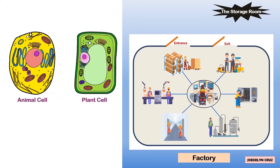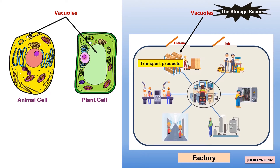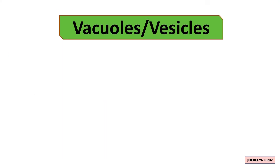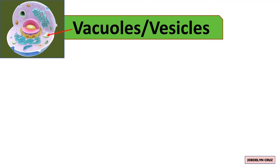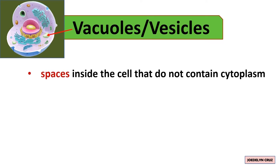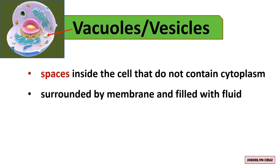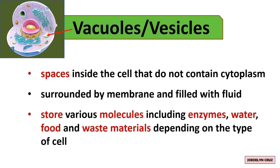The storage room or stock room represents vacuoles. In here, the products of the factory are kept and transported out of the factory. Vacuoles in animal cells are small and are called vesicles. Vacuoles are spaces inside the cell that do not contain cytoplasm; they are surrounded by membrane and filled with fluid. Vacuoles store various molecules including enzymes, water, food, and waste materials, depending on the type of cell.